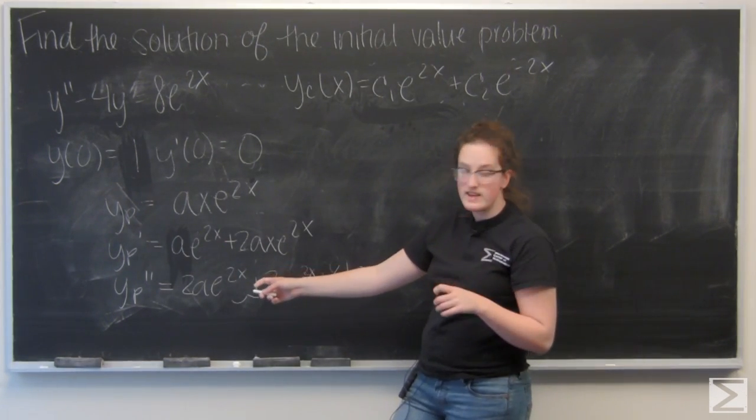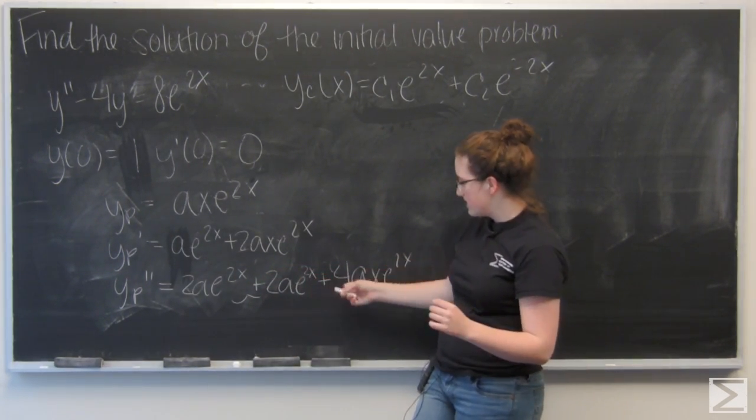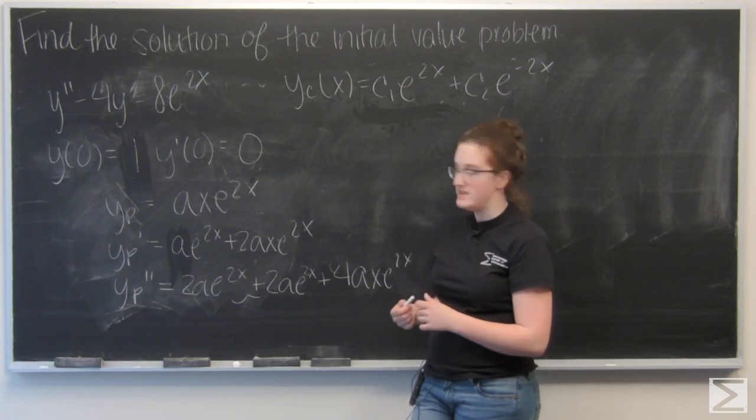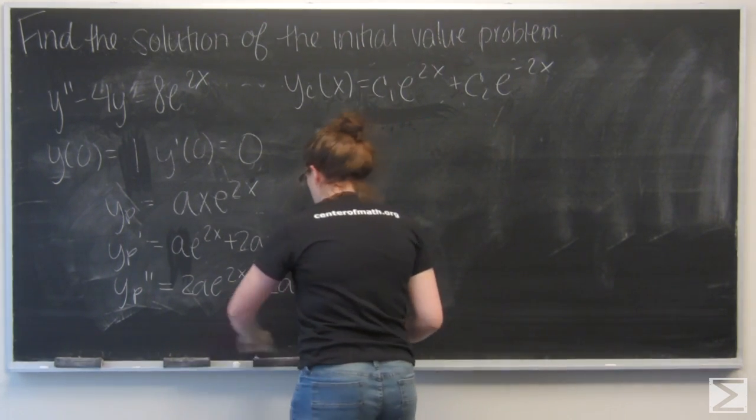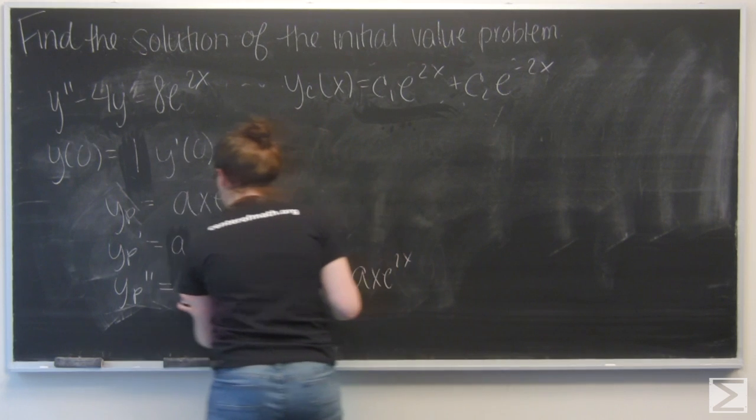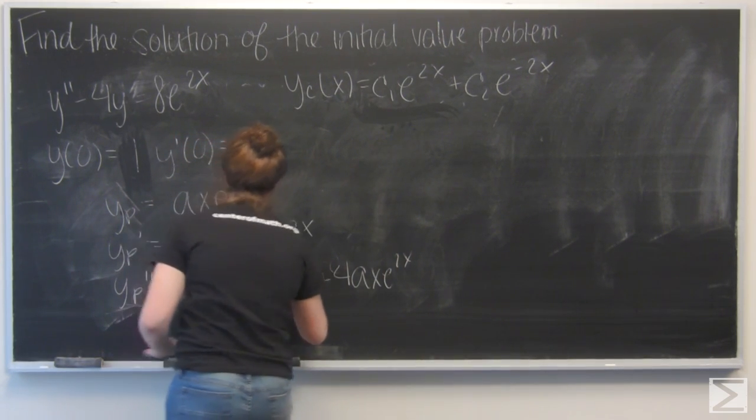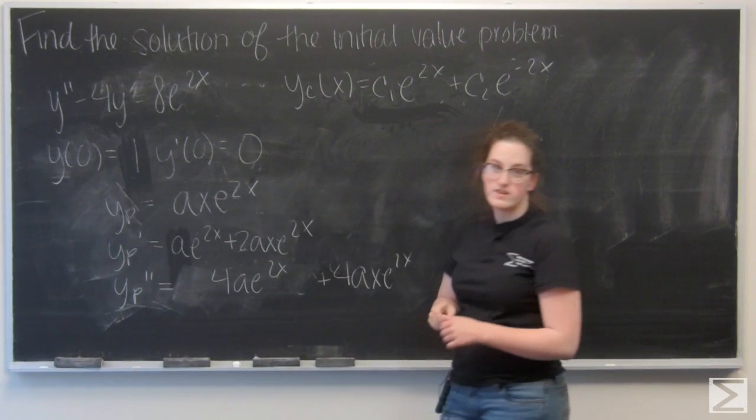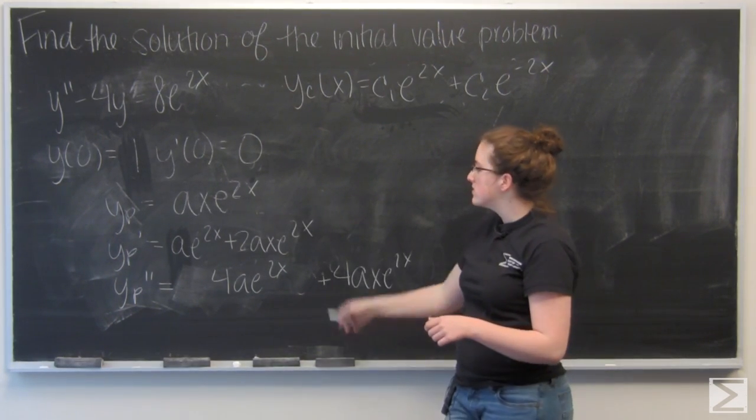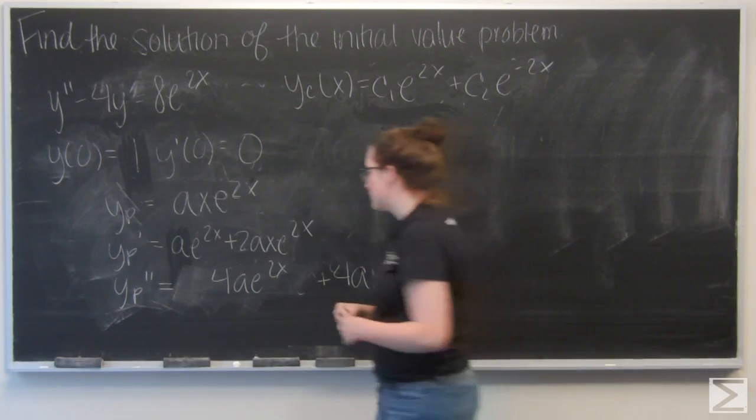I've got 2ae to the 2x plus 2ae to the 2x plus 4axe to the 2x. I can combine terms to get 4ae to the 2x here. So let's go ahead and plug this into the given second order equation.